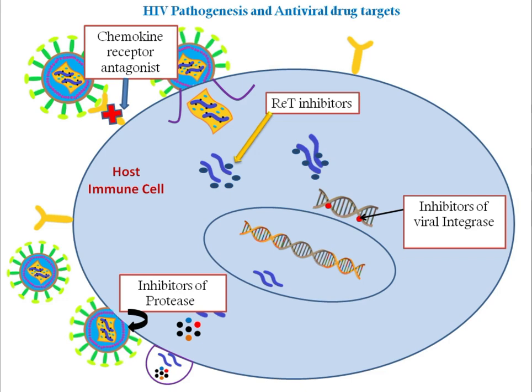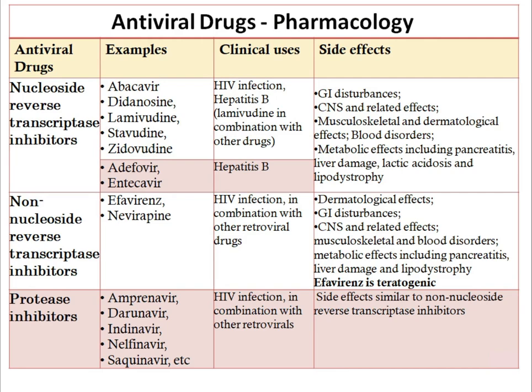Now discussing the pharmacological classification with clinical uses and side effects. First is nucleoside reverse transcriptase inhibitors, where abacavir, didanosine, lamivudine, stavudine, and zidovudine are included. They are mainly used in HIV infection as well as hepatitis B virus infection. Major side effects for this class include GI disturbances, CNS related side effects, musculoskeletal and dermatological effects, blood disorders, and metabolic effects including pancreatitis, liver damage, and lactic acidosis.